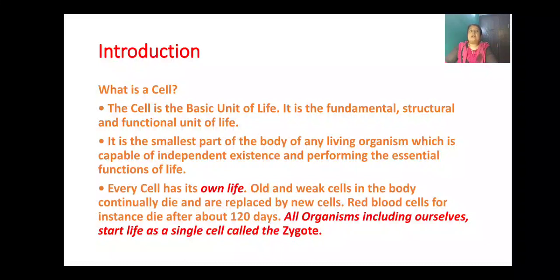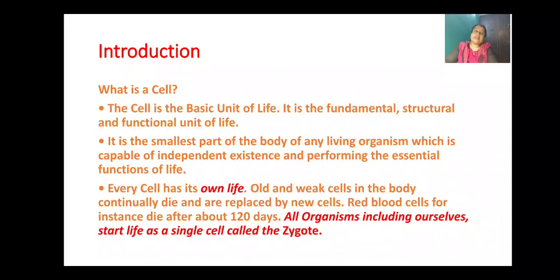For example, the RBCs in our body — the red blood cells in human blood. The lifespan of the red blood cell is only 120 days. After 120 days, they are again replaced; new cells are produced.